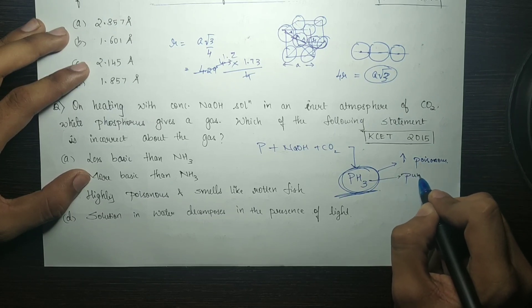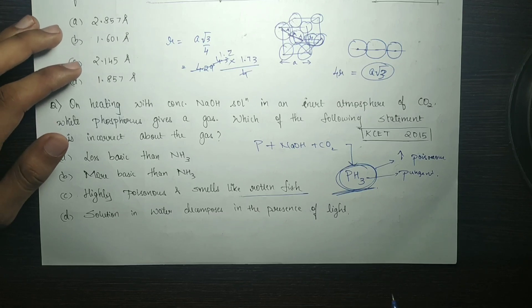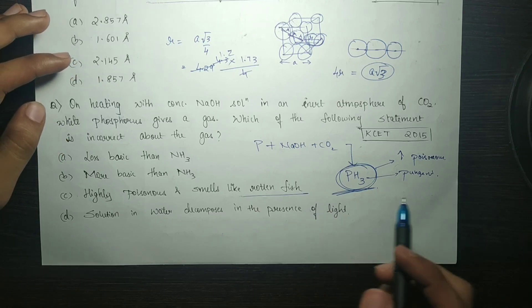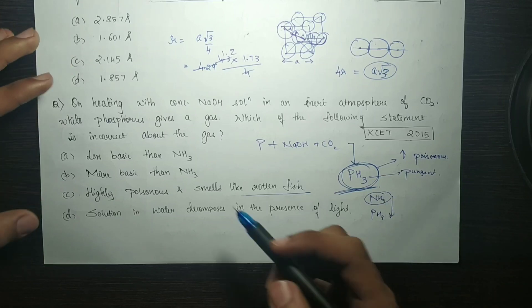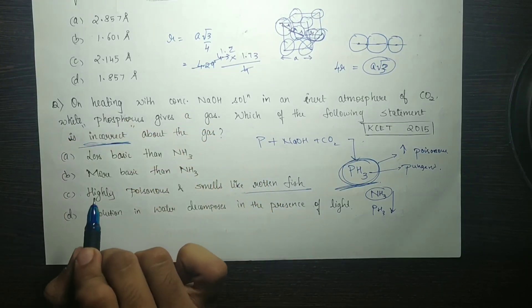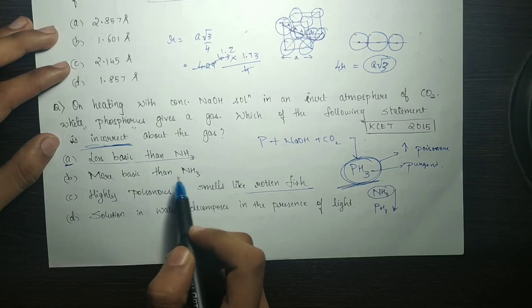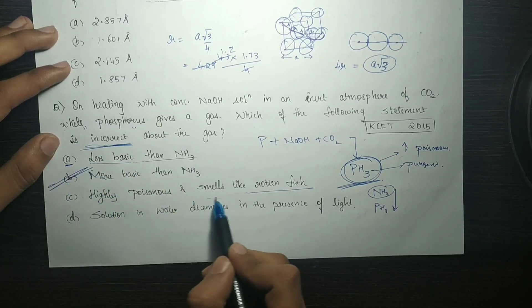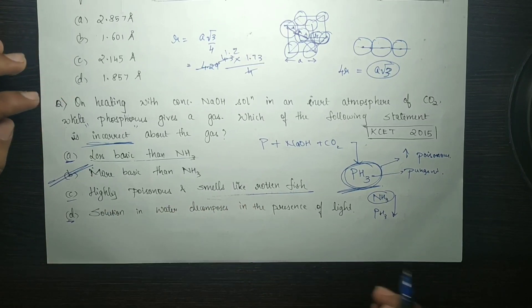Phosphine is highly poisonous and has a pungent smell like rotten fish. We can call it PH3. PH3 is less basic than NH3 because going down the periodic table the basicity decreases. So PH3 is less basic than NH3, which is true. More basic than NH3 would be false. The correct answer is: highly poisonous and smells like rotten fish — that option is correct. Solution in water decomposes in the presence of light is not relevant. So that's how we solved the question.